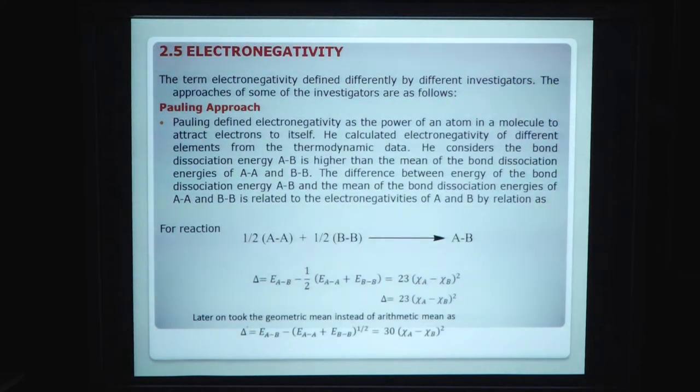Electronegativity. The term electronegativity is defined differently by different investigators. The approach of some of the investigators are as follows. Pauling approach. Pauling defined electronegativity as the power of an atom in a molecule to attract electrons to itself. He calculated electronegativity for different elements from the thermodynamic data.